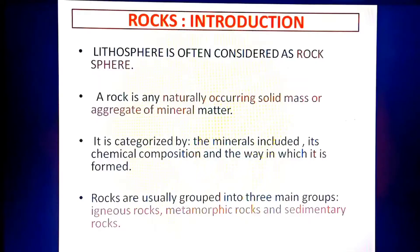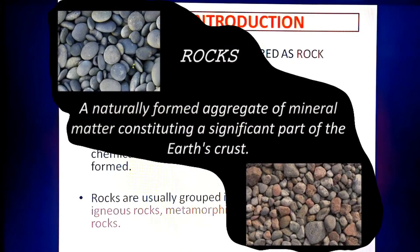Now the second point: a rock is any naturally occurring solid mass or aggregate of mineral matter. This means that a rock occurs naturally, it's a part of nature, and it has several minerals. A rock can have a single mineral or two or more than two minerals.